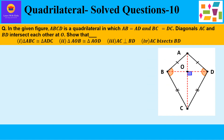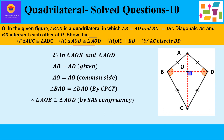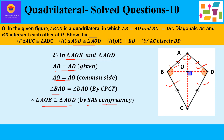Now let us take up the second part, where we have to prove that triangle AOB is congruent to triangle AOD — the two small triangles on the top. In triangle AOB and triangle AOD: AB is equal to AD, the two adjacent sides equal to each other. AO is equal to AO, the common side between the two triangles. And angle BAO is equal to angle DAO — we have already proved this in part one by CPCT. Therefore, by SAS congruency, triangle AOB is congruent to triangle AOD.